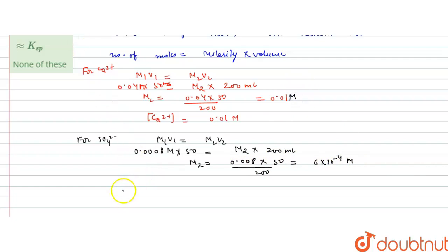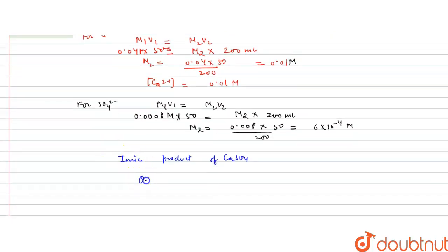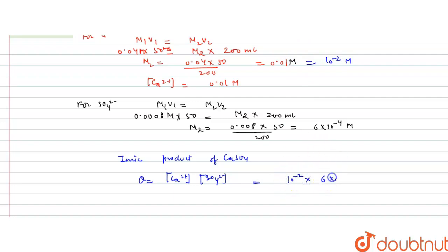Now we have to calculate the ionic product. The ionic product Q of calcium sulfate is equal to concentration of Ca²⁺ multiplied by concentration of SO₄²⁻. That will be 0.01 molar, which we can write as 10⁻² molar, multiplied by 6 × 10⁻⁴. This gives us 6 × 10⁻⁶. This is the ionic product of calcium sulfate.